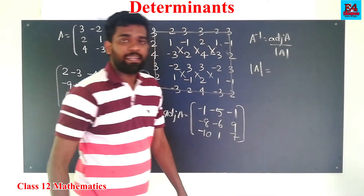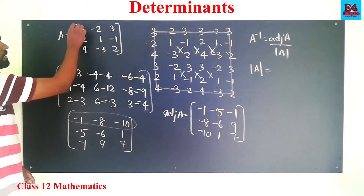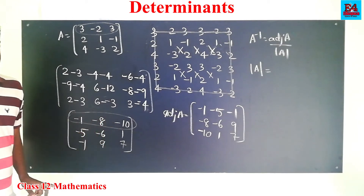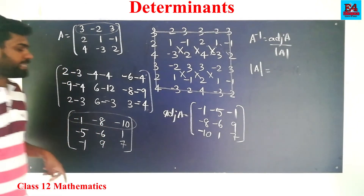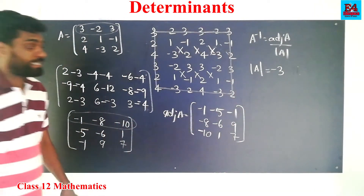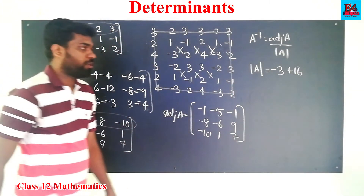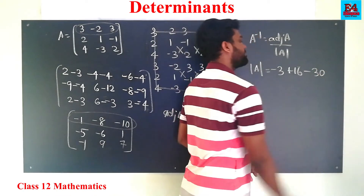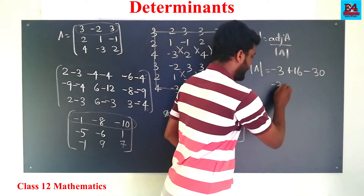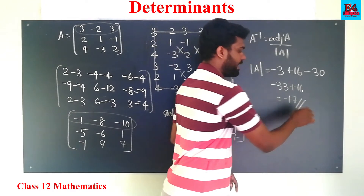This is the determinant of A. The co-factor matrix uses the first row. Determinant equals: 3 into 8 is 24, then 3 into minus 1 is minus 3, then minus 2 into minus 8 is plus 16. Then 3 into minus 30 gives minus 30. Minus 3 minus 30 is minus 33, plus 16 equals minus 17. So determinant A equals minus 17.